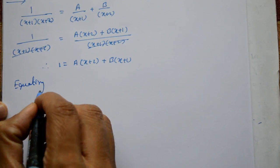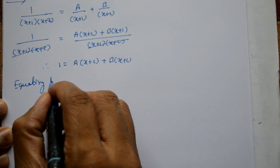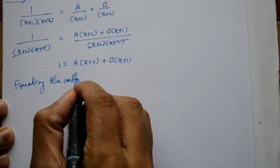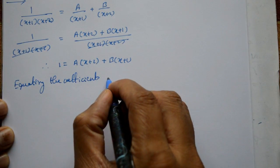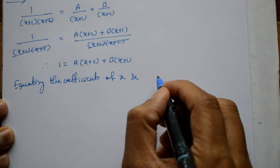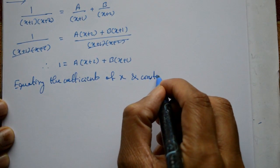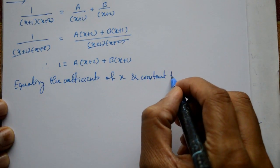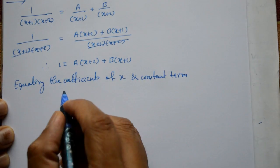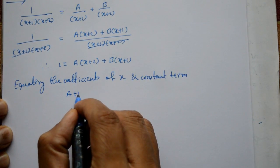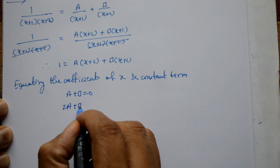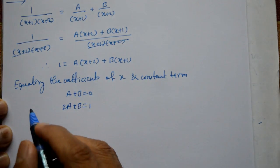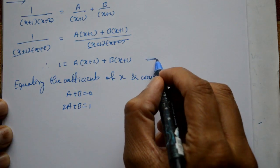Now, equating, either coefficient lahenge. Equating the coefficients of x and constant term lahenge. The constant term, so A plus B is equal to 0 hoga, and the second one, 2A plus B equal to 1 hoga.